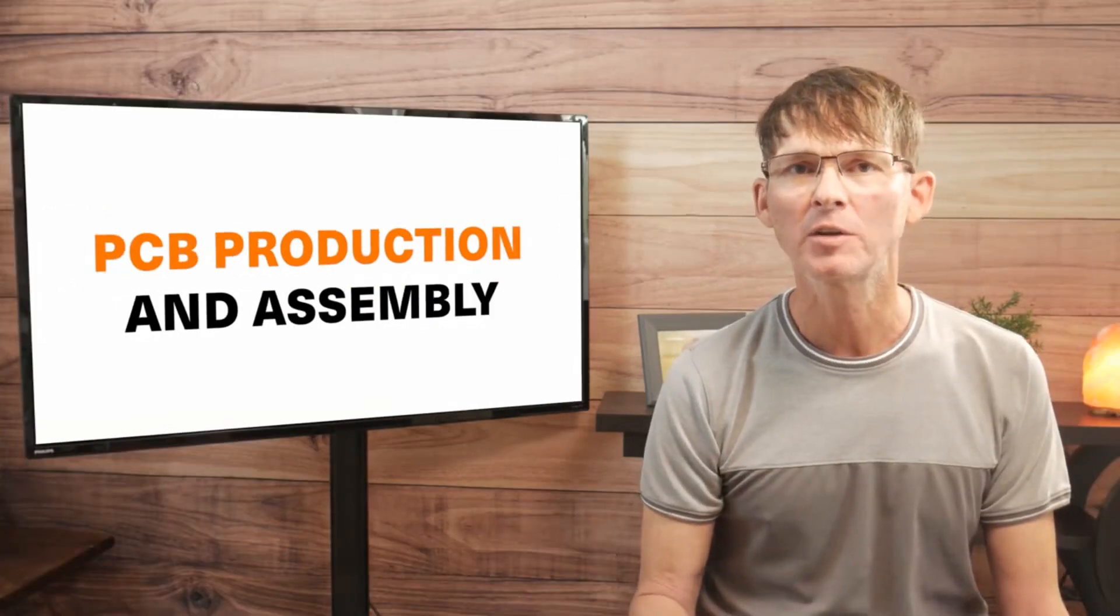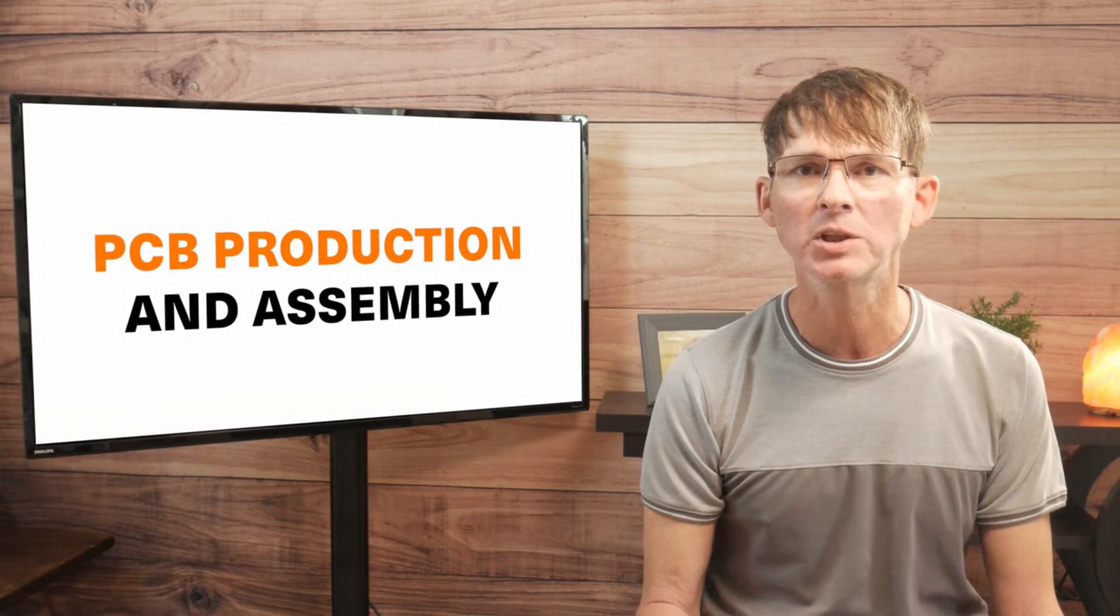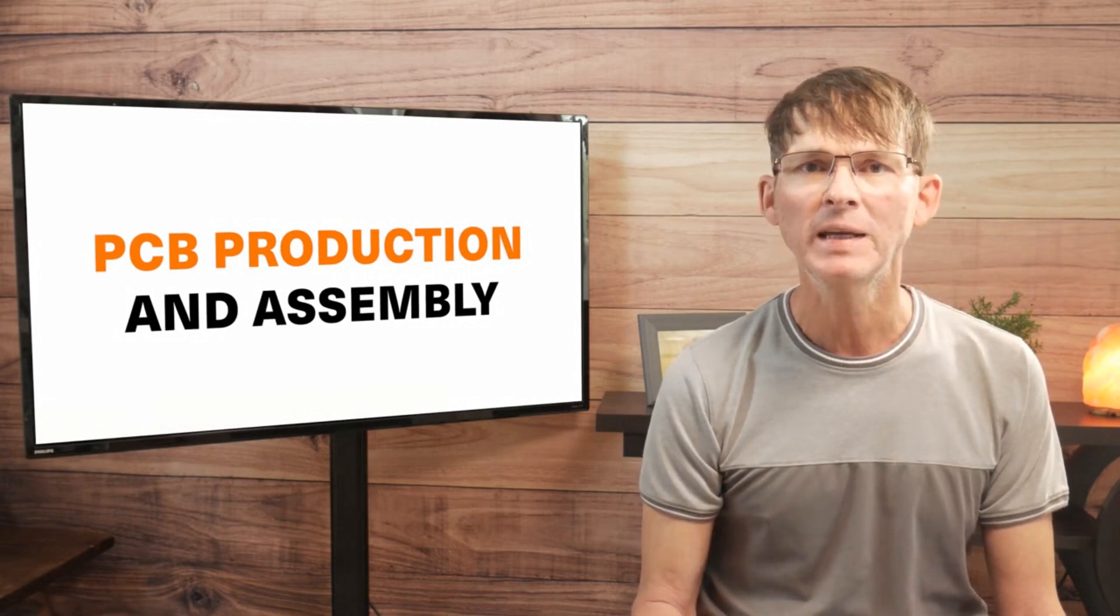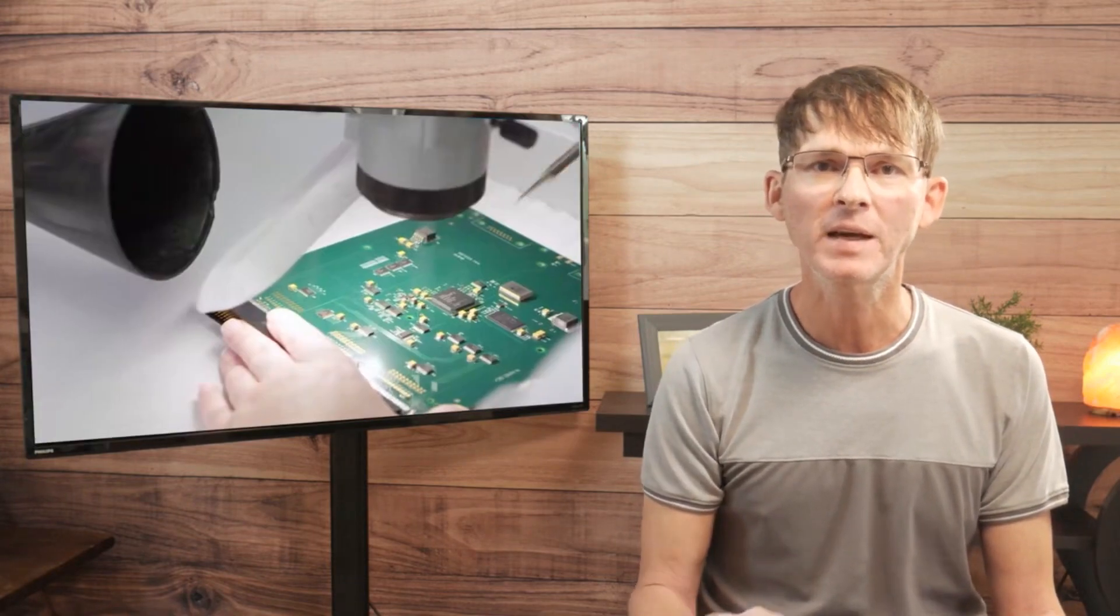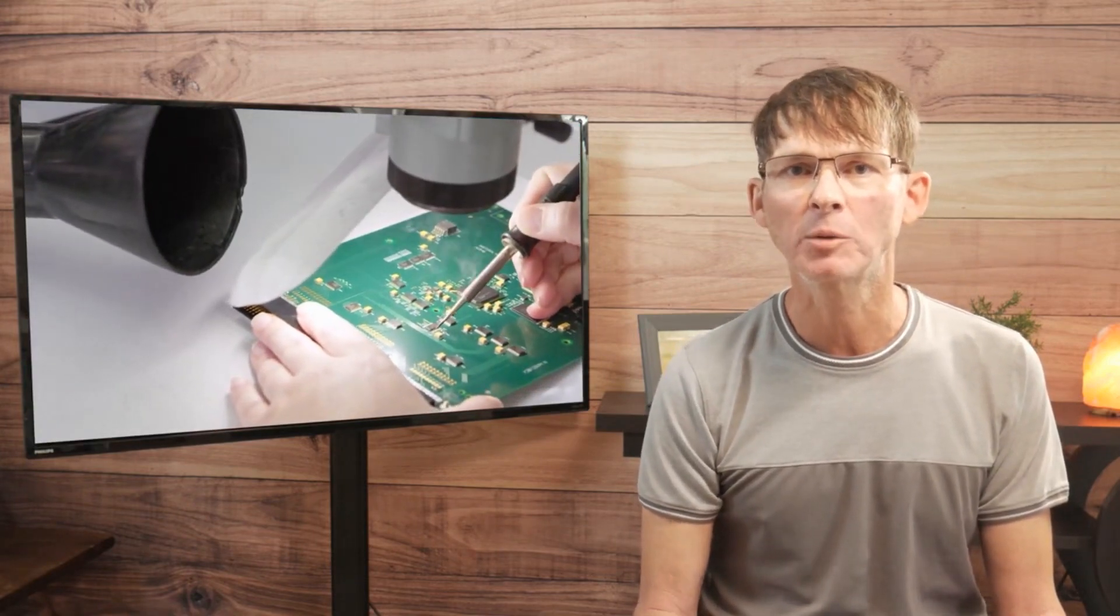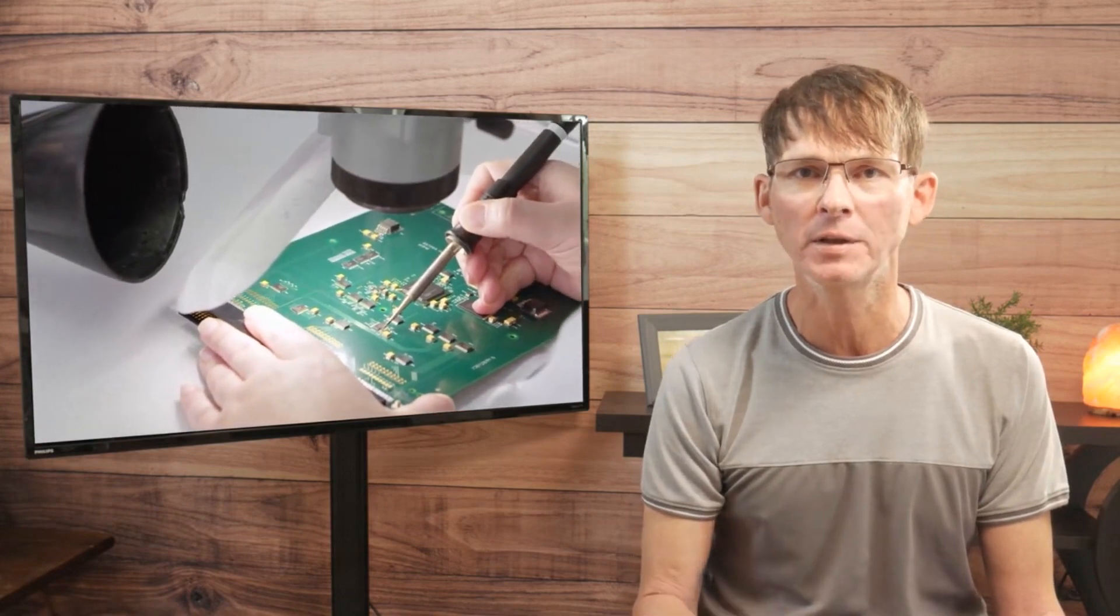Now we're going to look at the cost for the printed circuit board production and assembly. For any PCB, you need to first start off producing a blank printed circuit board. And then, a secondary step, all of the electronic components are soldered onto that board.